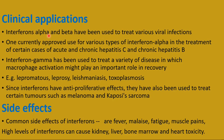For clinical applications, interferon alpha and beta have been used to treat various viral infections. Interferon alpha is currently used in the treatment of hepatitis C and hepatitis B. Interferon gamma (immune interferon) is used in treating a variety of diseases mainly related to macrophage activation, such as lepromatous leprosy, leishmaniasis, and toxoplasmosis. Since interferons also have antiproliferative effects, they have been used in the treatment of certain tumors such as melanoma and Kaposi's sarcoma.